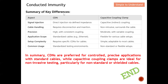In short, if we can test using CDN, then we should use CDN for conducted immunity testing. If CDN cannot be used, we fall back on the clamp method. The clamp may be less precise, but when testing with different or non-standard cables leaves no other option, the clamp method is the appropriate choice.